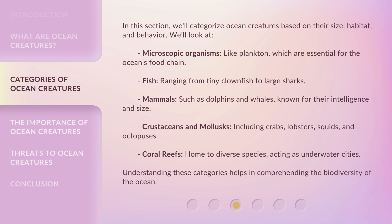Mammals, such as dolphins and whales, known for their intelligence and size. Crustaceans and mollusks, including crabs, lobsters, squids, and octopuses. Coral reefs, home to diverse species, acting as underwater cities. Understanding these categories helps in comprehending the biodiversity of the ocean.